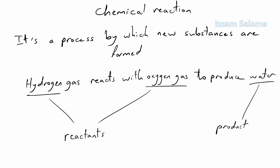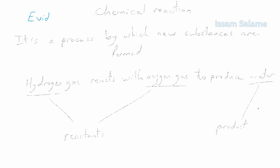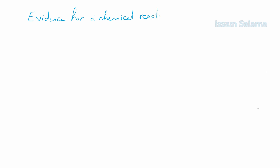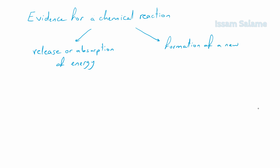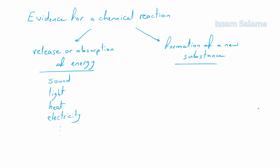Whenever a new substance is formed, this is a chemical change. There are some evidences that a chemical reaction has occurred, like the release or absorption of energy, or the formation of a new substance. The energy released or absorbed can be in the form of sound, light, heat, electrical, or any other form of energy.